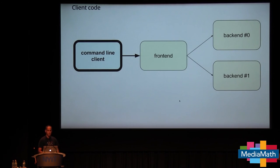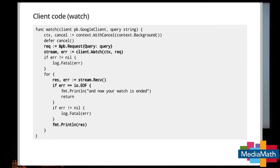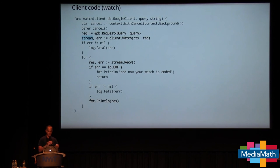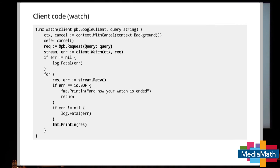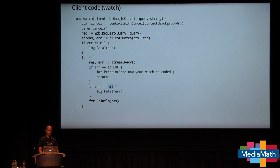Let's look at the Watch code. On the client side: we create the query, call client.Watch, and instead of getting a result back we get a GoogleWatchClient stream object. We loop calling stream.Receive, which blocks until it returns a result or error. Streams can return io.EOF to indicate the server explicitly closed its end — analogous to closing a channel. Otherwise the stream returns errors to indicate failure, and on success we print the result.